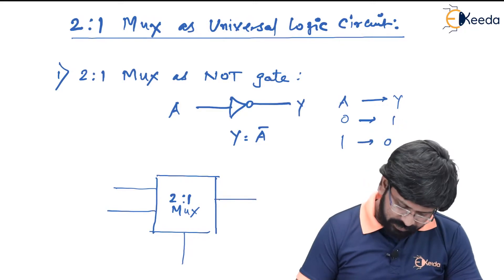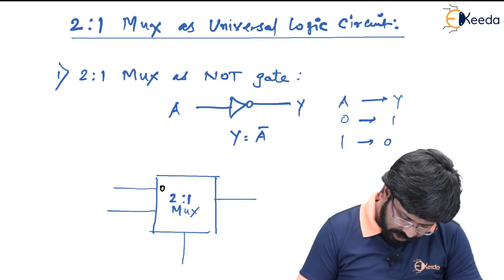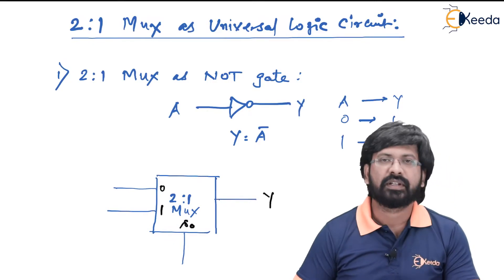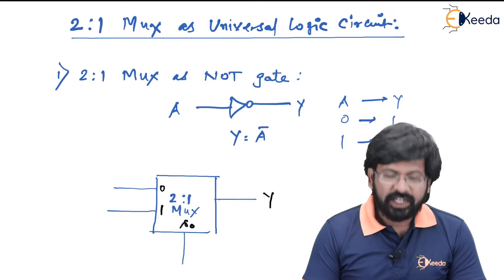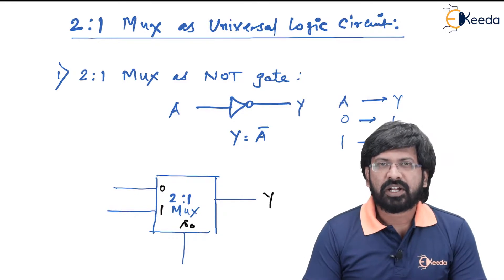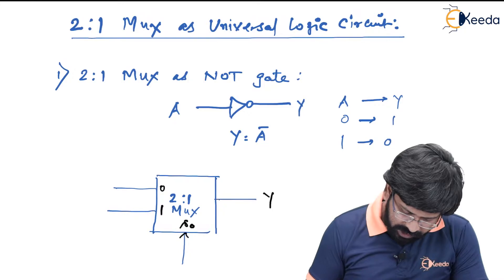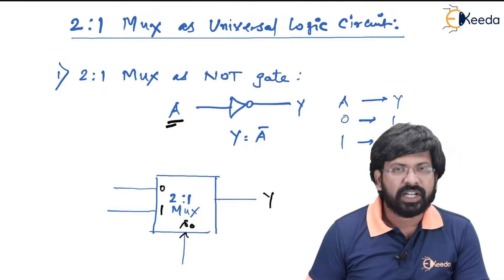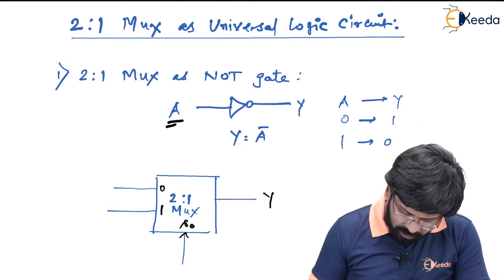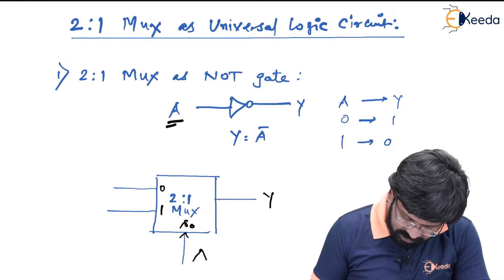As you can see, a 2-to-1 multiplexer has two inputs I0 and I1, one output Y, and one select line called S0. The key point is whenever you want to implement a particular logic gate, you have to give a name to the select line as if it is the input of a gate. Since we have only one input and only one select line, I am going to name S0 as if it is A.